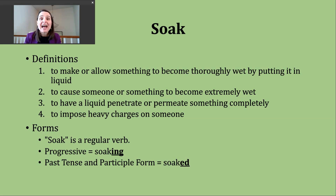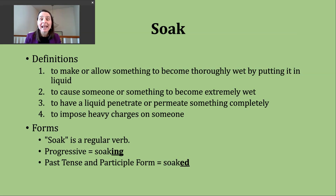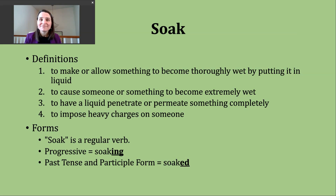You should know that soak is a regular verb. To make the progressive form, add -ing to form soaking. The past tense and participle forms can be made by adding -ed. Our base verb, soak, ends in an unvoiced k sound. This means the -ed ending is going to make a t sound, and we don't add an extra syllable as we say it. So it should sound like this: soaked.